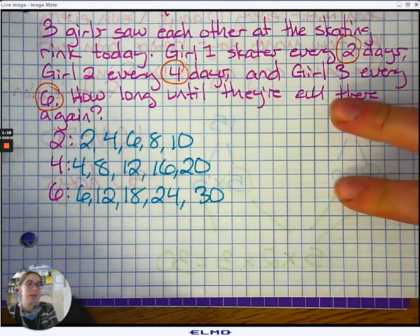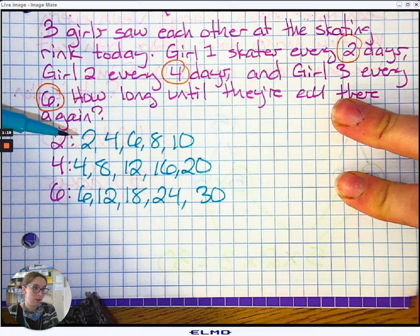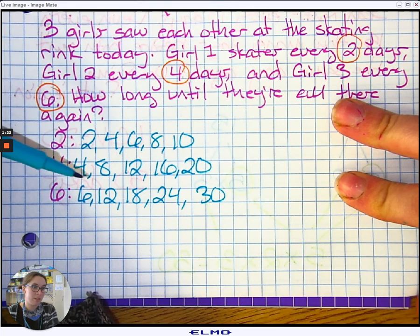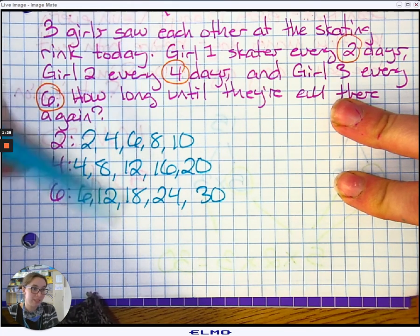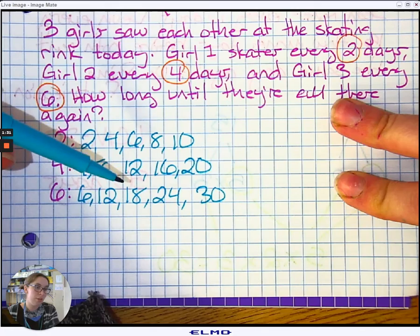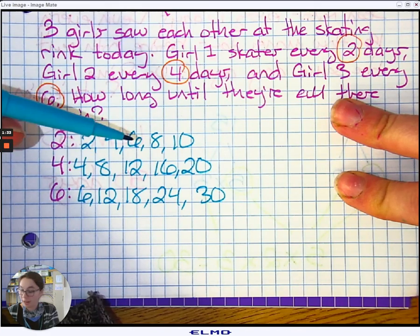Do we have any common equals across all three? Well, these two share four, but six doesn't. Six and two share six, but four doesn't. Four and two share eight, but six doesn't. And four and six share twelve, but two doesn't either.